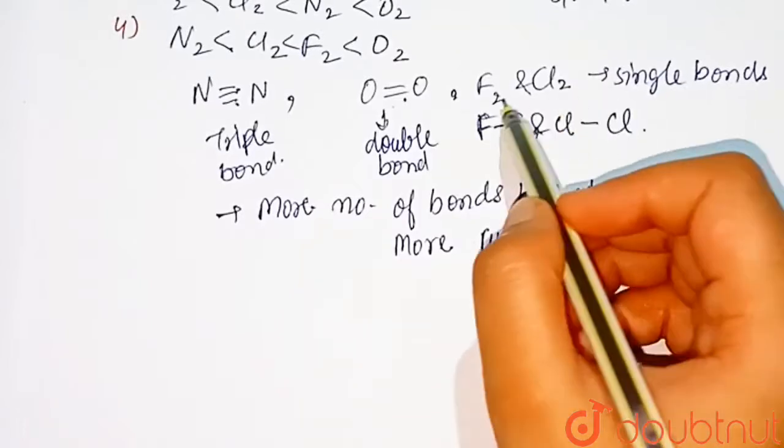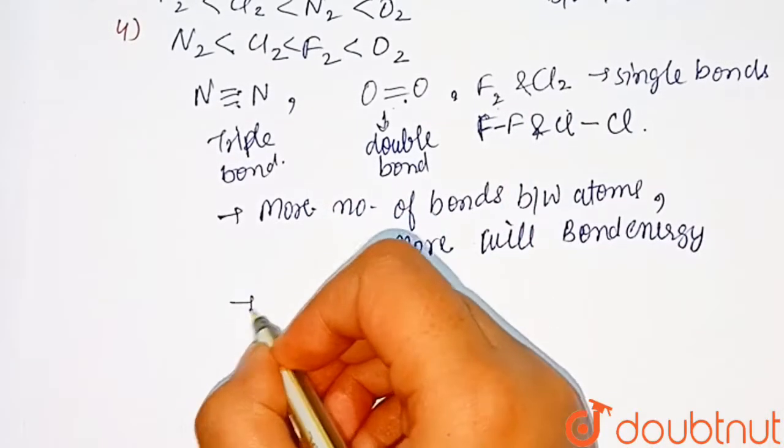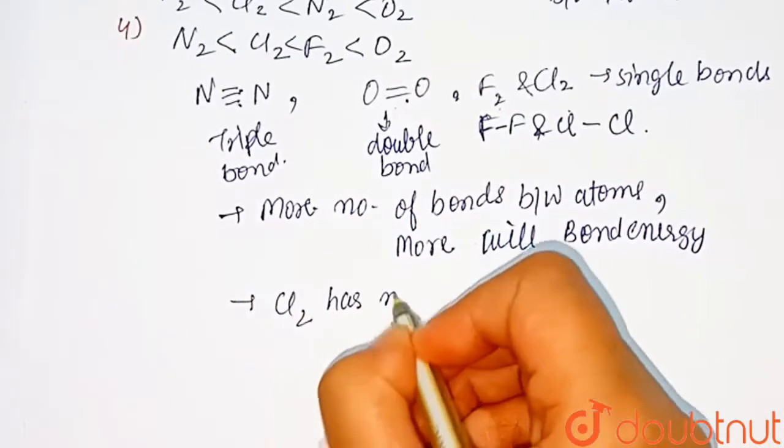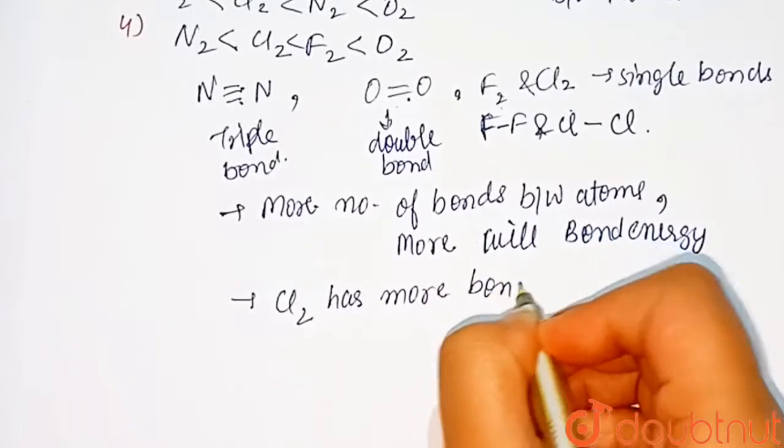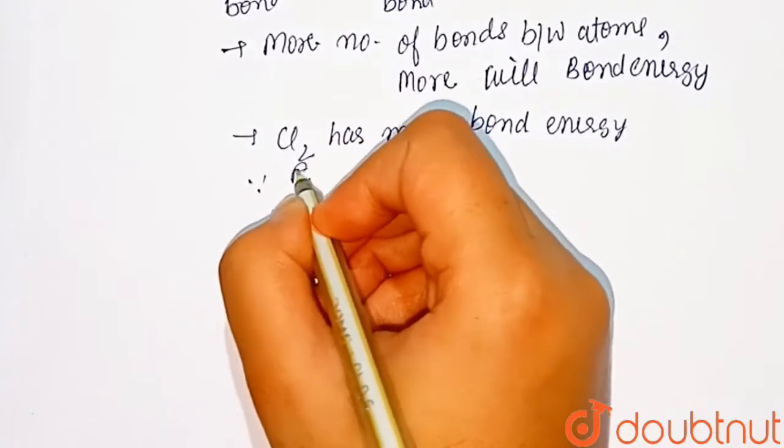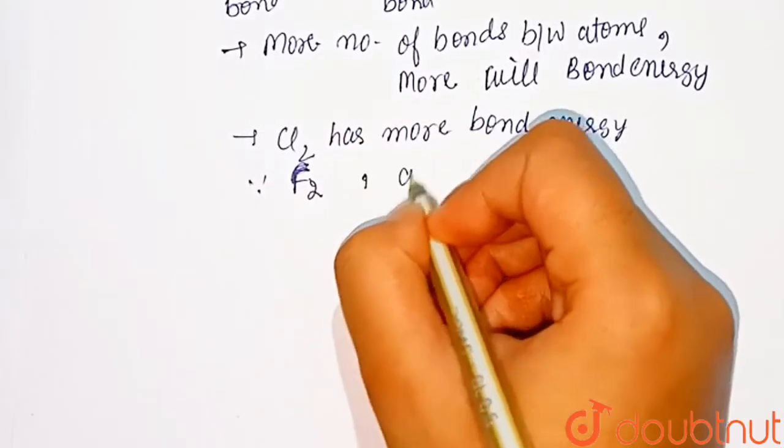And between fluorine and chlorine, chlorine has more bond energy because in F2 fluorine, the atoms are closer